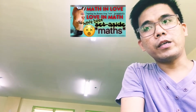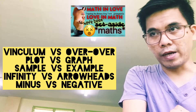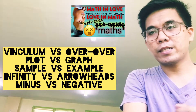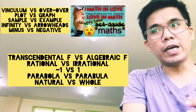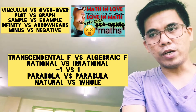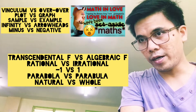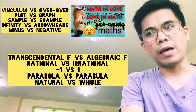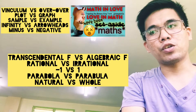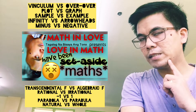Here are the 10: vinculum versus over-over, plot versus graph, sample versus example, infinity versus arrowheads, minus versus negative, transcendental function versus algebraic function, rational numbers versus irrational numbers, negative one versus one, parabola versus parabola, and natural or counting numbers versus whole numbers. Simple and basic.